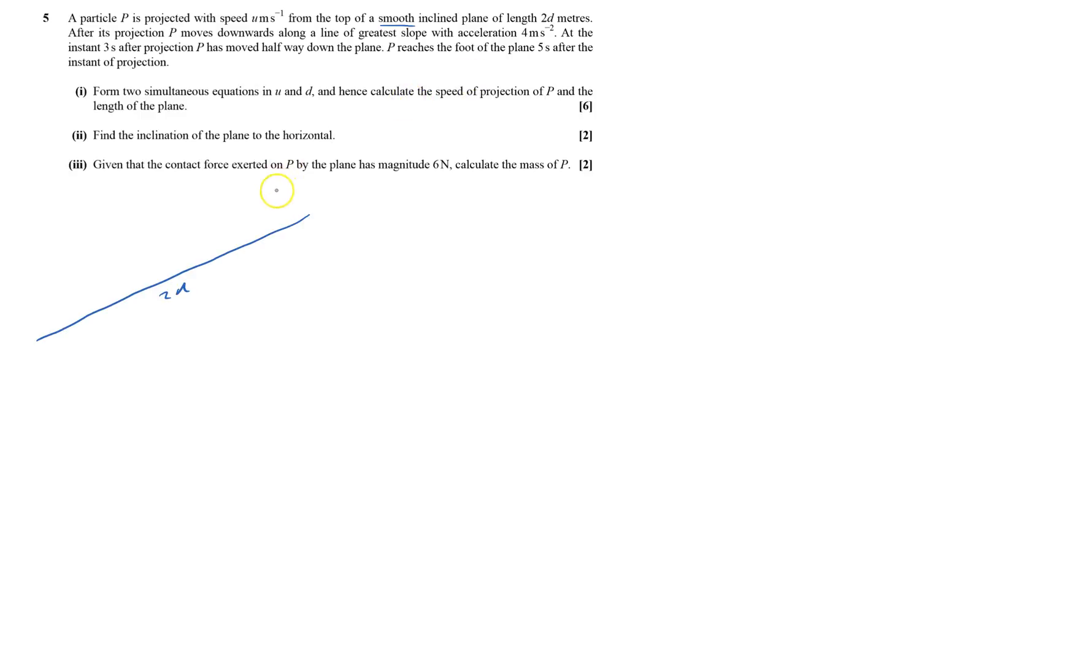Length acceleration is 4 meters per second squared. Initial velocity at top is u meters per second. At the instant 3 seconds it's moved halfway down the slope, so that takes 3 seconds, and it reaches it 5 seconds. So this bit here is 2 seconds for the second d bit. That's the d bit there.